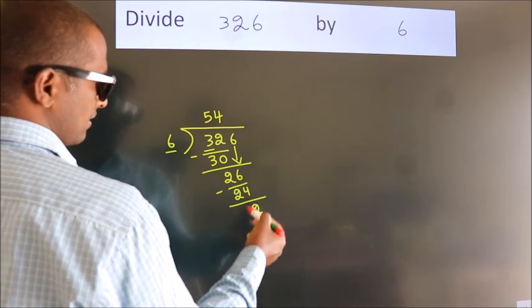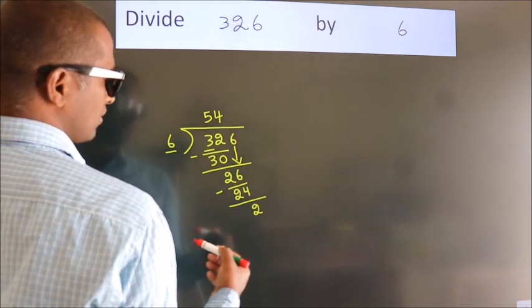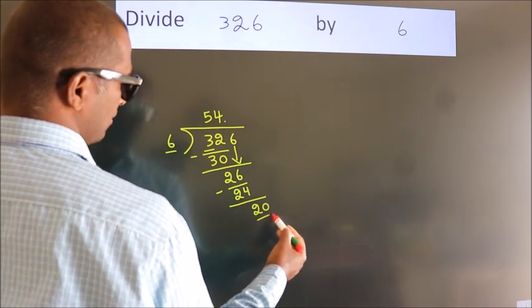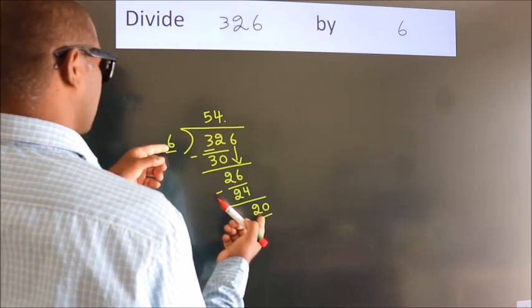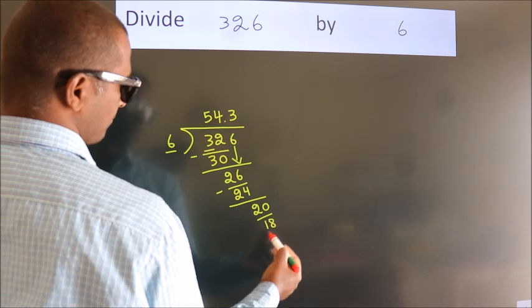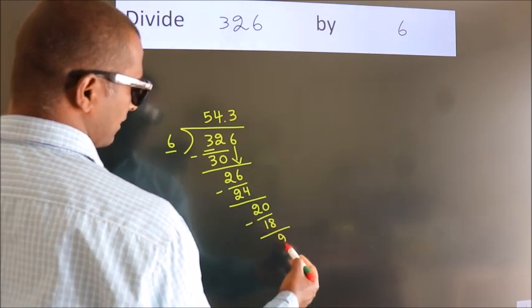After this, no more numbers to bring it down. So what we do is, we put dot, take 0. So 20. A number close to 20 in the sixth table is 6 threes, 18. Now we subtract. We get 2.